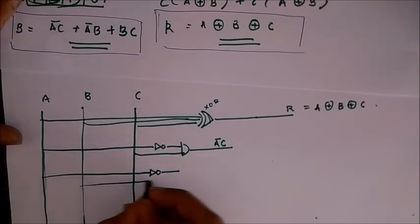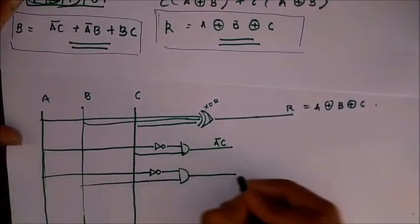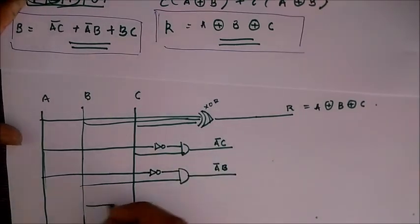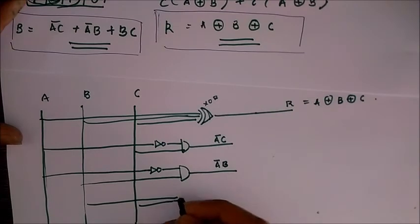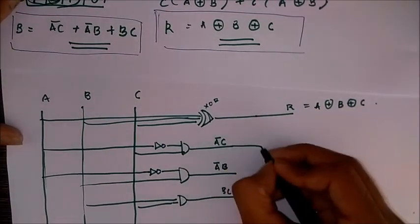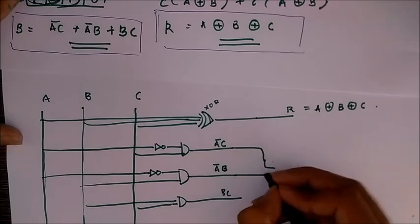A bar B pass through an AND gate, we get A bar B plus B C. B C, B and C pass through an AND gate and all these are summed through an OR gate, that is a plus or OR is produced by an OR gate.